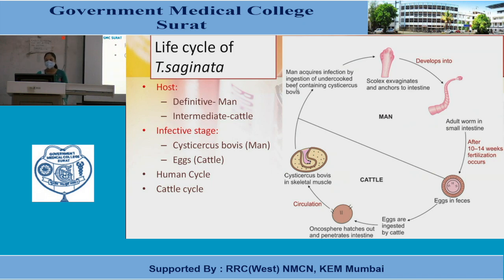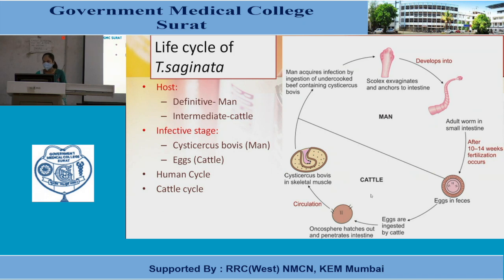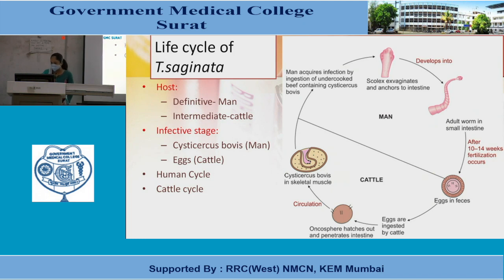Men acquire infection by ingestion of undercooked beef containing cysticercus bovis. The scolex evaginates and attaches to the intestine, developing into an adult worm in the small intestine. After 10–14 weeks, fertilization occurs and eggs appear in feces — completing the human cycle. In the cattle cycle: eggs ingested by cattle, oncosphere hatches and penetrates the intestine, circulates, and forms cysticercus bovis in skeletal muscle. Men acquire infection by eating undercooked beef; cycle is repeated.